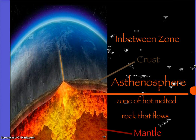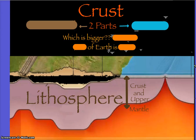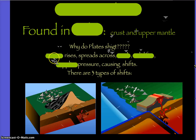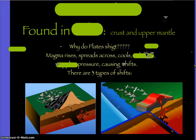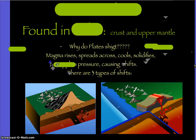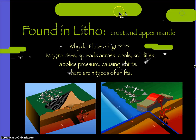The asthenosphere, when it flows, it rises and cools. When magma rises and cools, it's going to turn into solid rock, and that's going to apply pressure to the plates — and that's what causes these plates to shift.